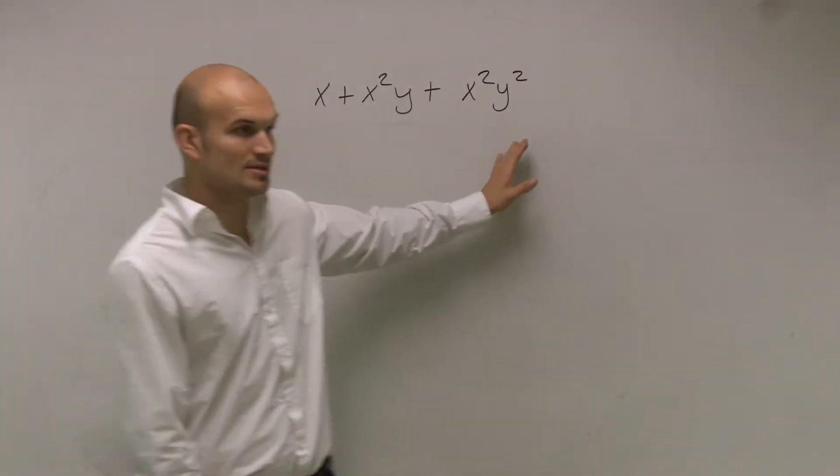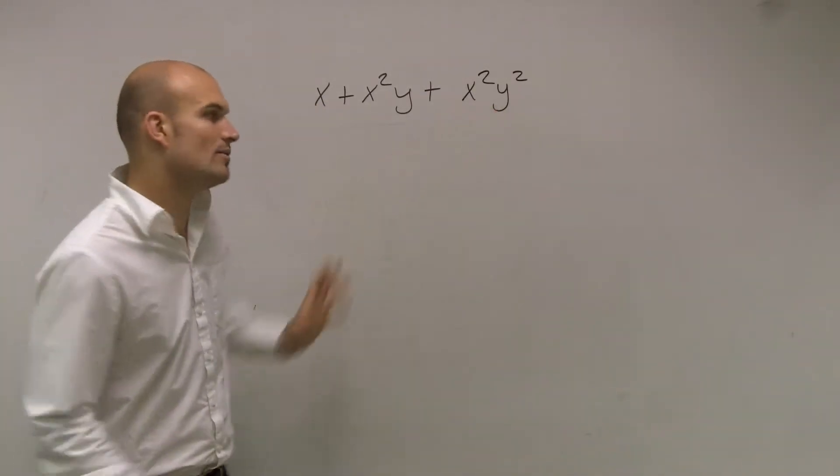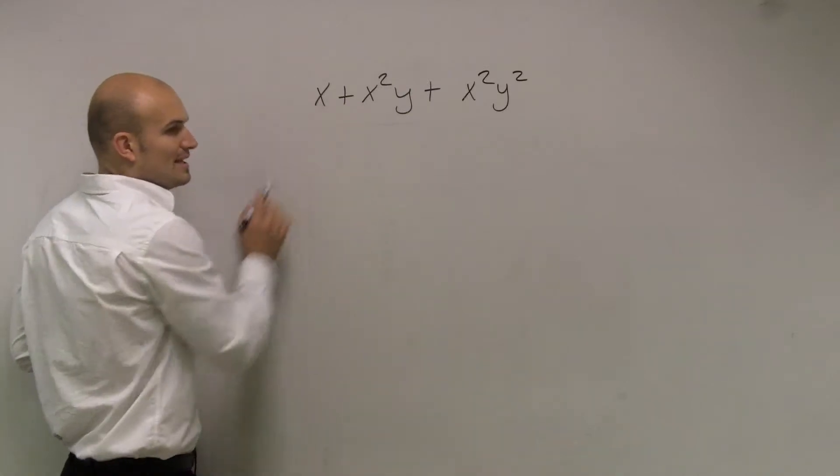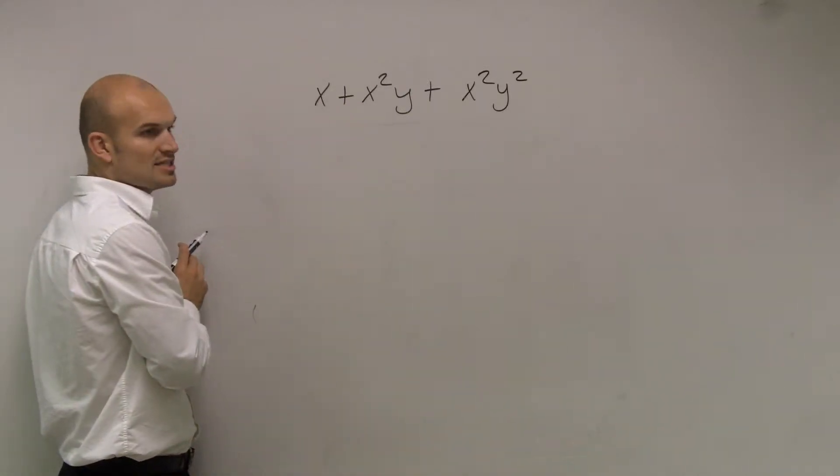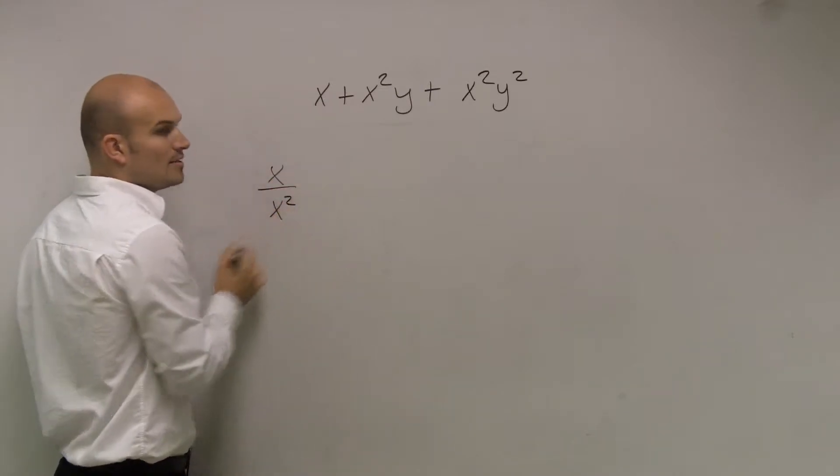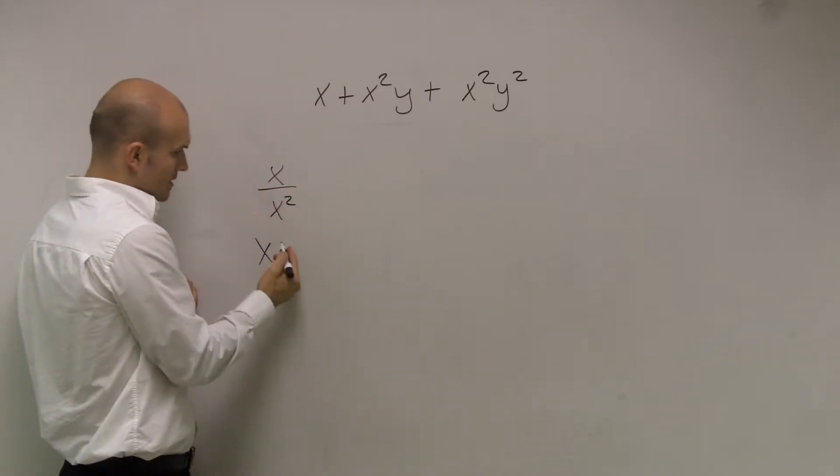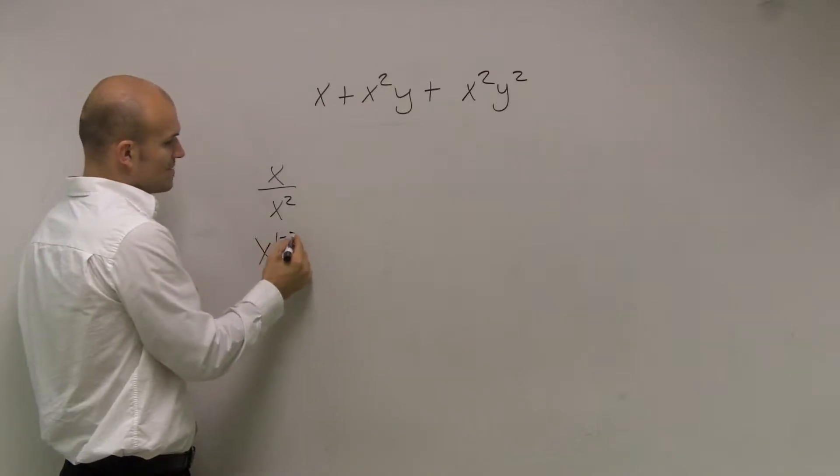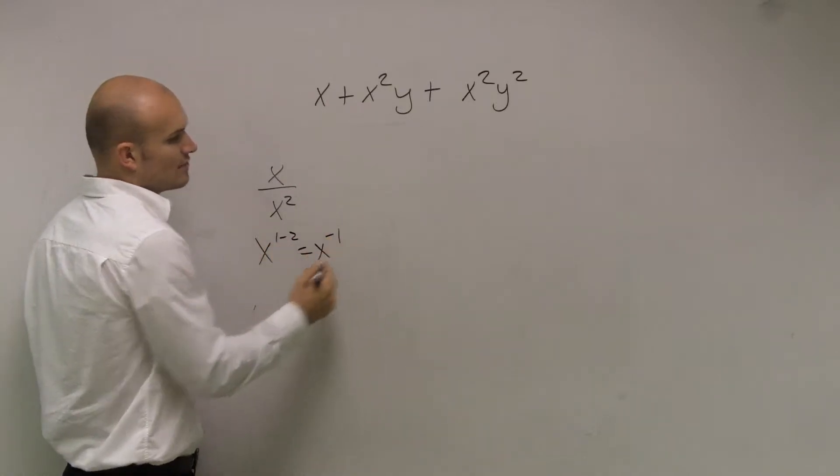A lot of people, some people say, oh well, the x squared, right? Well, we have an issue right here because we can't divide x by x squared. Remember, if we did x divided by x squared by rule of exponents, we'd have x to the first minus second equals x to the negative first power.